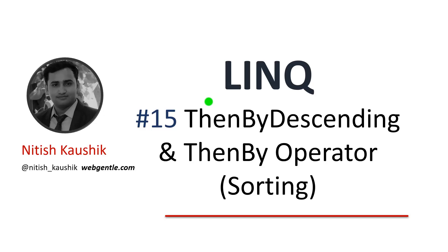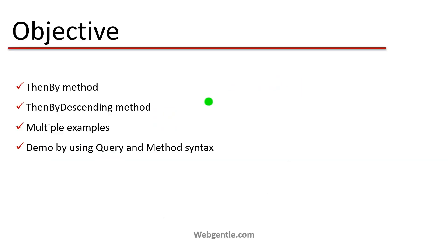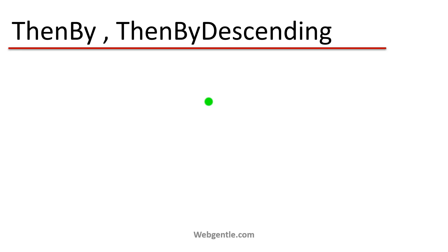Suppose we first sort our data based on first name, and if the first name matches, then we sort based on some other property — in descending or ascending order. In this video, we will cover the ThenBy and ThenByDescending methods, and create multiple examples of both in query syntax and method syntax.